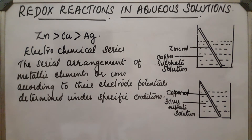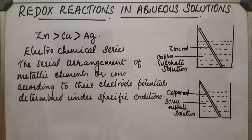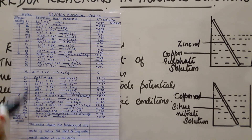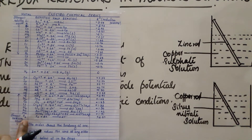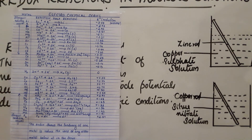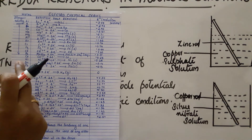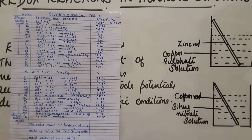This order shows the tendency of one metal to reduce the ions of any other metal lower in the series. Metals above in the series can reduce the metals below it. In the electrochemical series, lithium is the strongest reducing agent and fluorine is the strongest oxidizing agent. The series also shows the tendency of one metal to reduce ions of other metals below it.